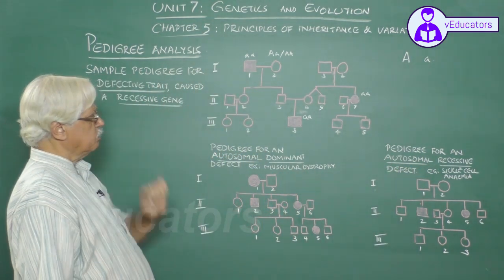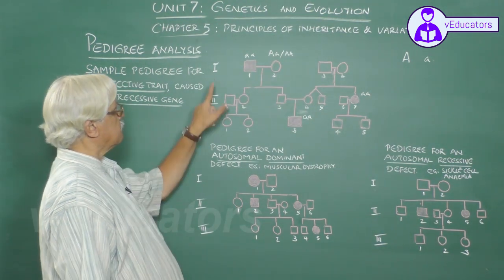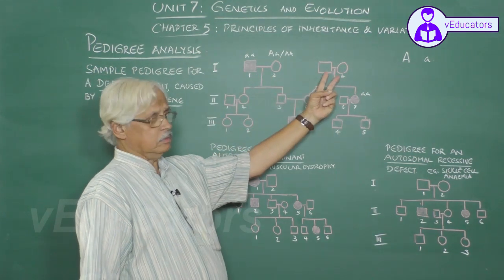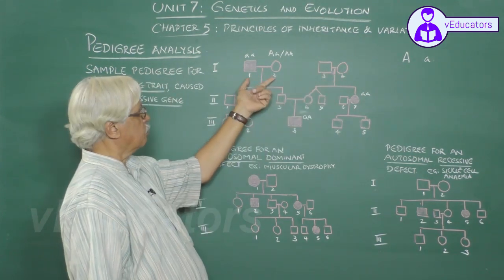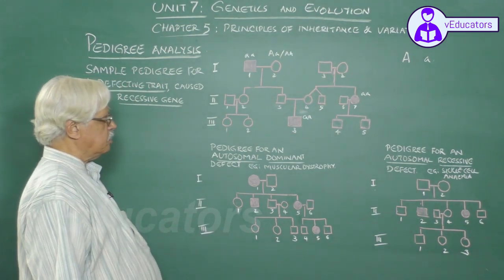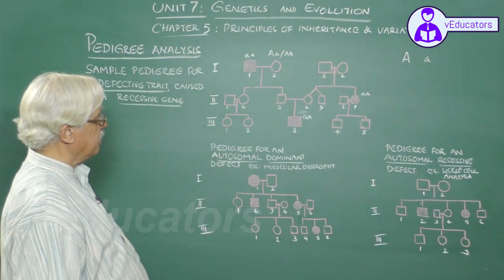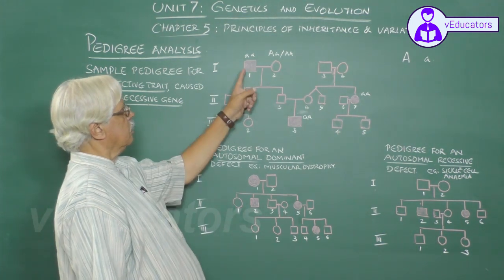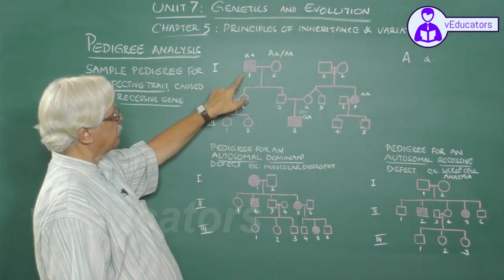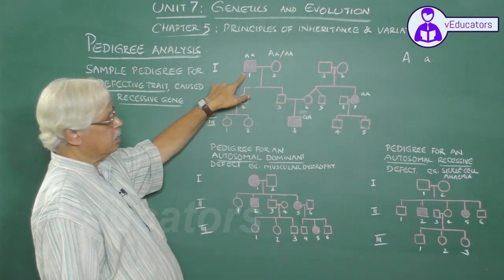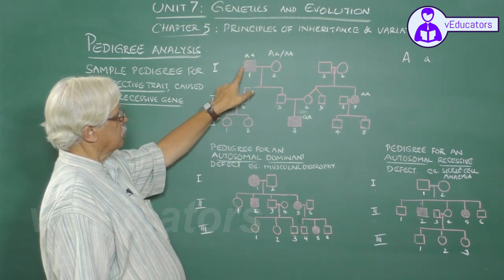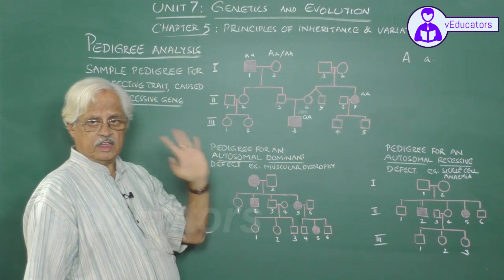In the first generation, the first generation is involved in two families. In the second generation, the second generation is also involved in two families.